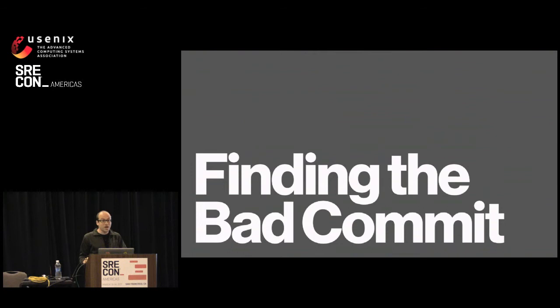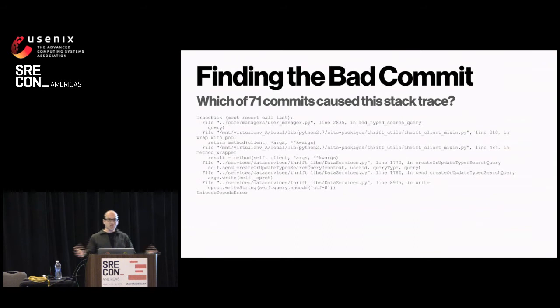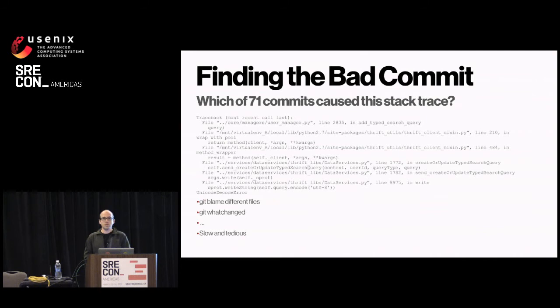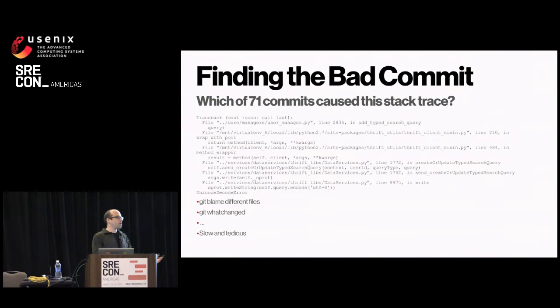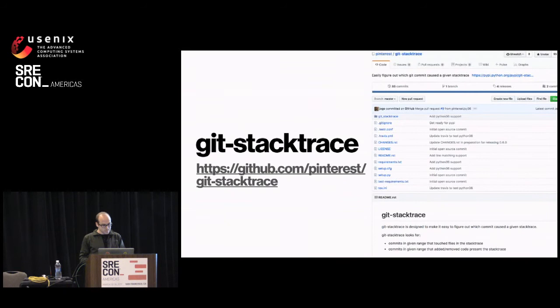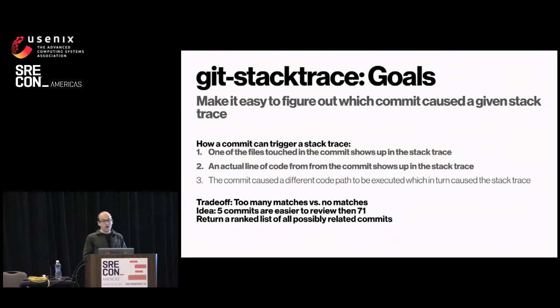Once we have all this, we need to find the bad commit. The problem is: we have a stack trace, we know what broke, but which of these 71 commits actually caused it? A lot of people do this by hand — using git blame, looking at files in the stack trace, looking at all files changed across the commit range, scrolling through 71 commits or grepping around. These are great approaches but they're slow and tedious, especially as the stack trace gets taller with more files. So we wrote a tool called git-stack-trace, available on GitHub as open source.